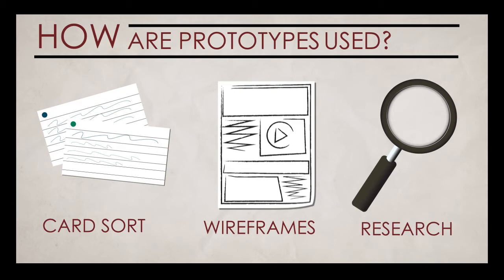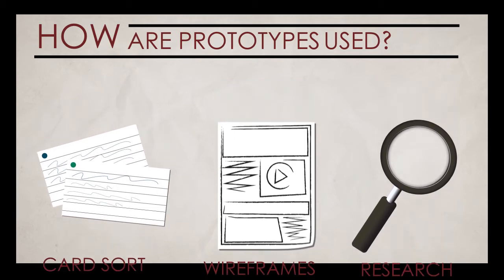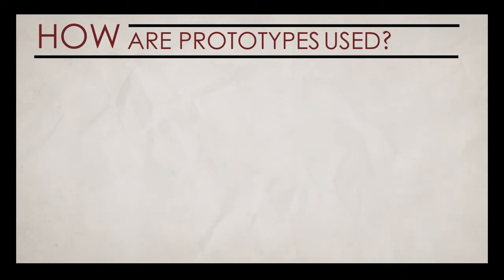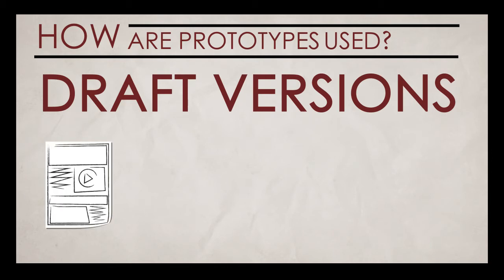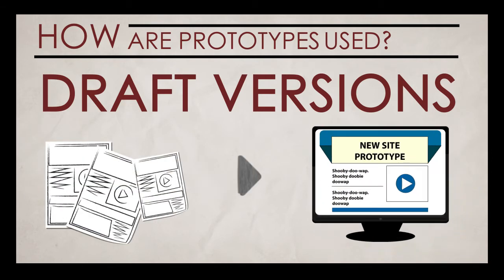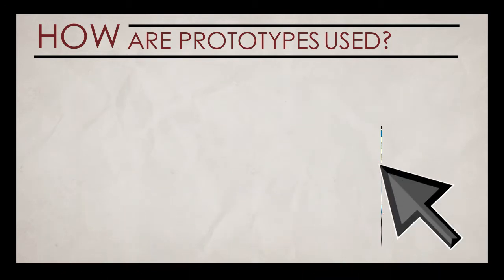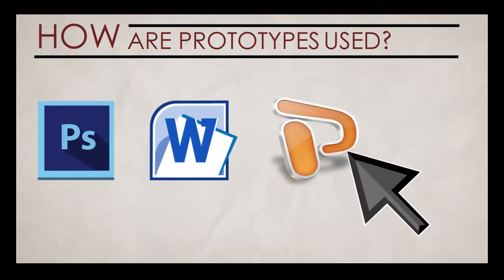These guide development and help determine what the website or app actually looks like. The draft versions can range from simplistic paper sketches to computer-based mock-ups of websites or applications. A variety of computer software programs can also be used to create visuals.